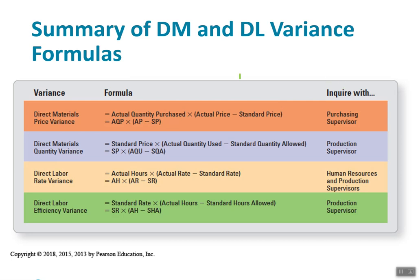Looking through direct material and direct labor, here are the formulas and — more importantly — who is responsible. The purchasing supervisor is responsible for the direct material price variance. The production supervisor is responsible for the direct material quantity variance. For wages, you look at either human resources or a production supervisor. Direct labor efficiency is the production supervisor. I recommend printing out that one slide specifically to solve problems. Sometimes you just plug in numbers; sometimes you need additional calculations. These formulas will answer about 75–80% of the problems, at least in the short-answer ones.